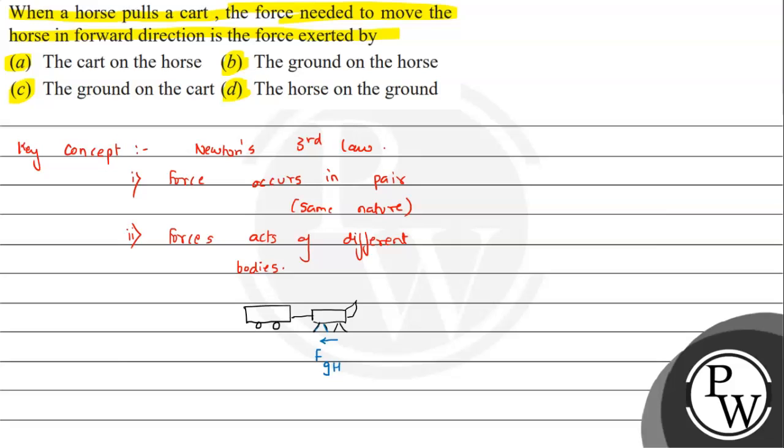So here the horse has a force on the ground, so the ground on the horse will be in the opposite direction. This will be the force on horse due to ground. If we analyze the horse in this situation, the horse has a force due to ground, so this is why the horse is going to move forward.